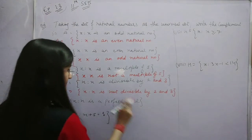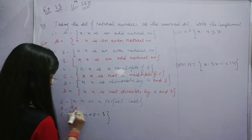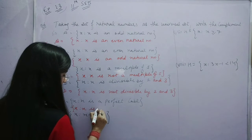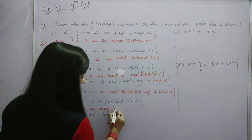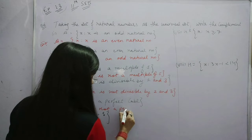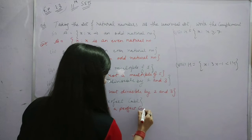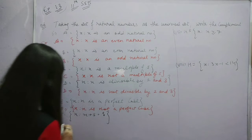For the part: x such that x is a perfect cube. What is the complement? The complement is x such that x is not a perfect cube.